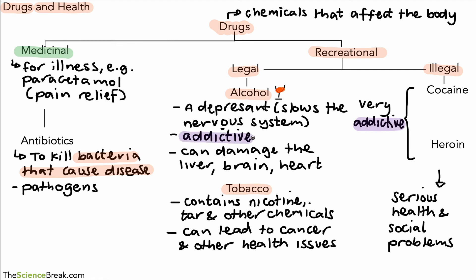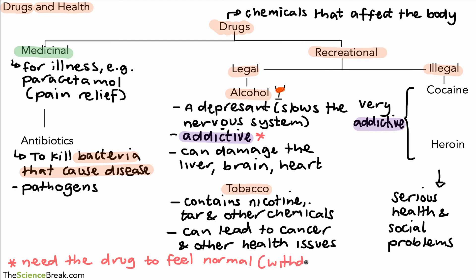The word addictive is important to understand. If a person is addicted to a chemical or a drug, that means they need the drug to feel normal — in other words, to stop feeling unwell. What happens is that the person will suffer withdrawal symptoms, which can be things like headache, nausea, or depression if they don't get the drug, and therefore the drug is described as addictive.